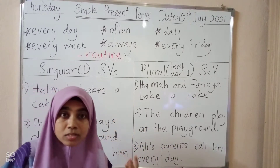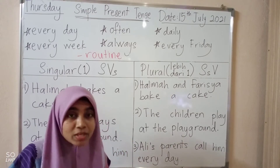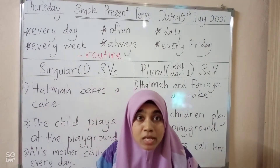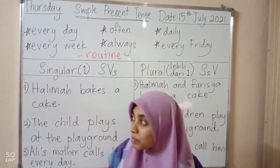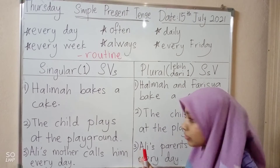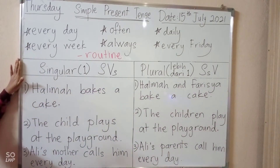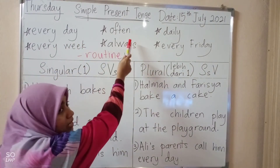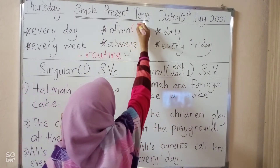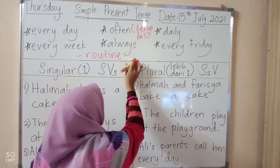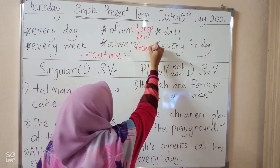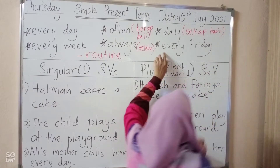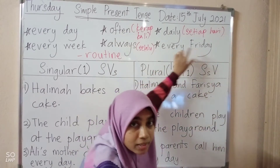Let's take a look at some time phrases which you will find in sentences when you answer the Google form later. The time phrases include: every day, every week, often (kerap kali), always (selalu), daily (setiap hari), every Friday, every Monday, every Tuesday.